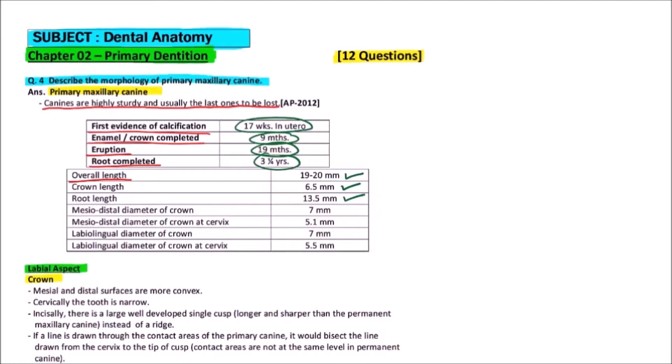The mesiodistal diameter of the crown is about 7 millimeters. The mesiodistal diameter of crown at cervix is about 5.1 millimeters, and the labiolingual diameter of the crown is about 7 millimeters, which at the cervix becomes 5.5 millimeters.